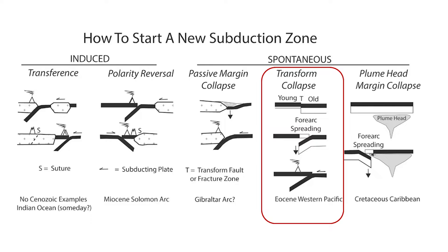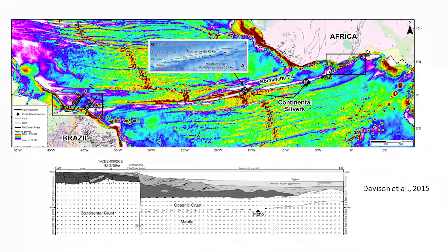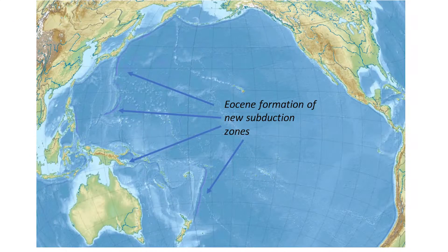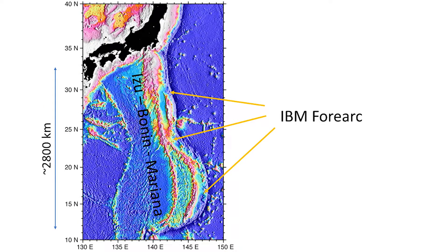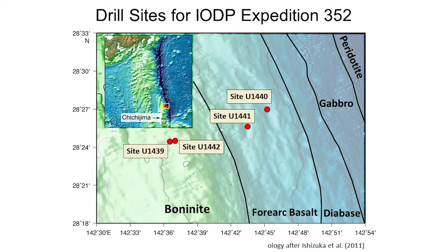Transform or fracture zone collapse is straightforward. Transforms and fracture zones are profound lithospheric weaknesses that are often long and often juxtapose oceanic lithospheres of different ages and thus different densities. This happened in the western Pacific when much of the western margin of the Pacific plate collapsed into a west-dipping subduction zone. Evidence for how and when this new subduction zone formed is preserved in the forearc and inner trench wall of the Izu-Bonin-Mariana, or IBM, convergent margin, and these ideas were tested in 2014 by seafloor drilling.